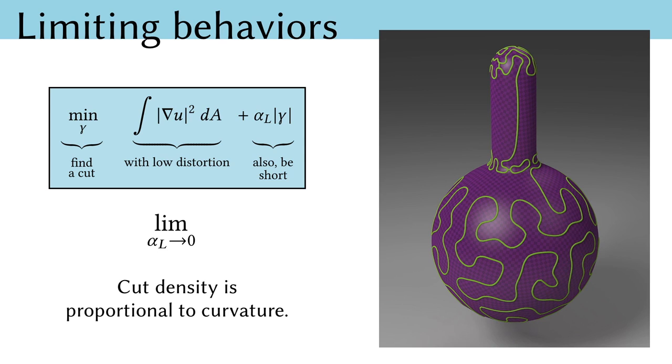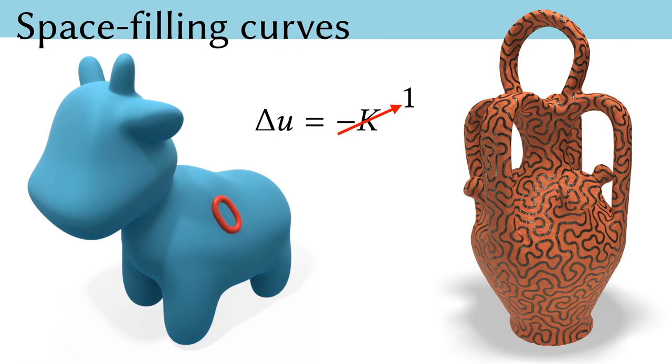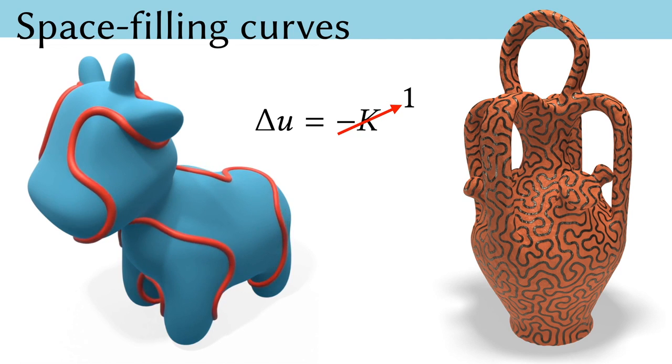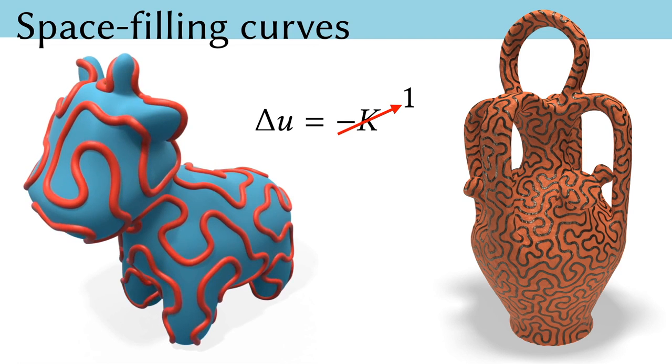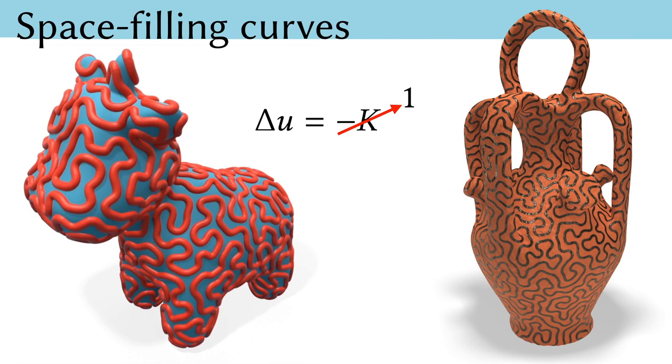In the limit of weak length penalty, our flow generates cut curves with density proportional to the Gaussian curvature of the underlying surface. We can leverage this limiting behavior to design smooth space-filling curves by continually weakening the length penalty while running our flow. Here, we drive the flow with a constant right-hand side rather than Gaussian curvature to yield uniformly distributed cut curves.